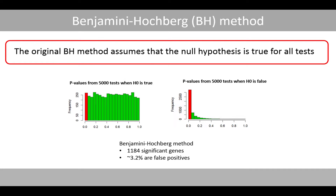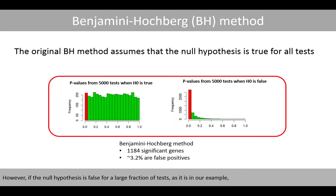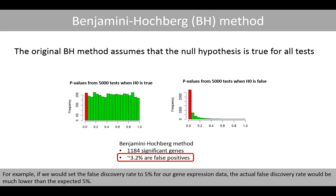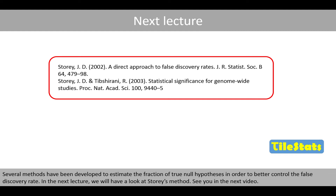Note that the original Benjamini-Hochberg method assumes that the null hypothesis is true for all tests. However, if the null hypothesis is false for a large fraction of tests, as in this example, the method will result in a lower false discovery rate than the one we desire. For example, if we set the false discovery rate to 5% for our gene expression data, the actual false discovery rate would be much lower than the expected 5%. Several methods have been developed to estimate the fraction of true null hypotheses in order to better control the false discovery rate. In the next lecture, we'll have a look at Storey's method. See you in the next video.